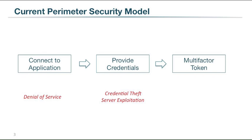At the credential phase, if credentials are stolen it allows attackers to get through, and this is also where you start seeing server exploitation — either in the credential phase or they get right in and start hammering the servers. At the multi-factor stage we see two things: even if multi-factor works, that doesn't help you with connection hijacking. Moreover, the token can be stolen, which opens you up to APT lateral movement attacks.